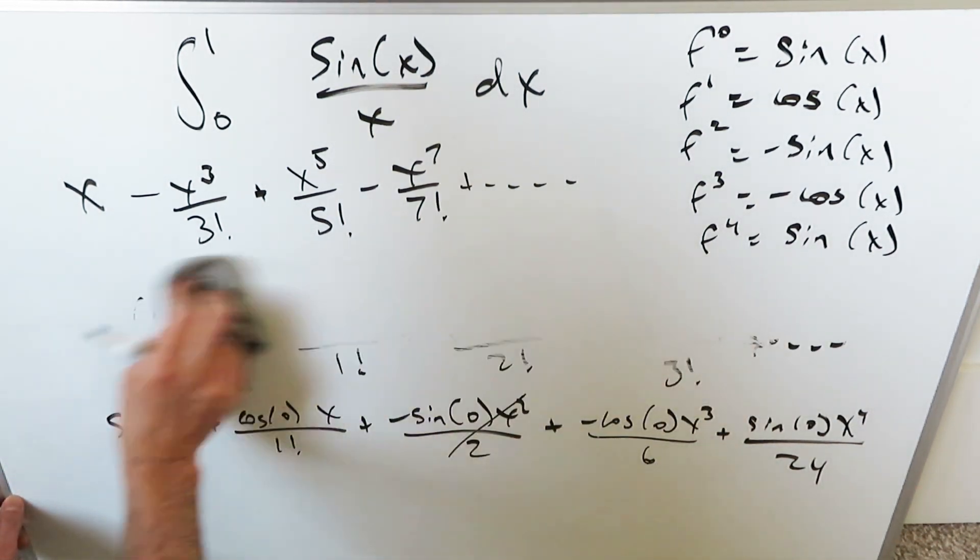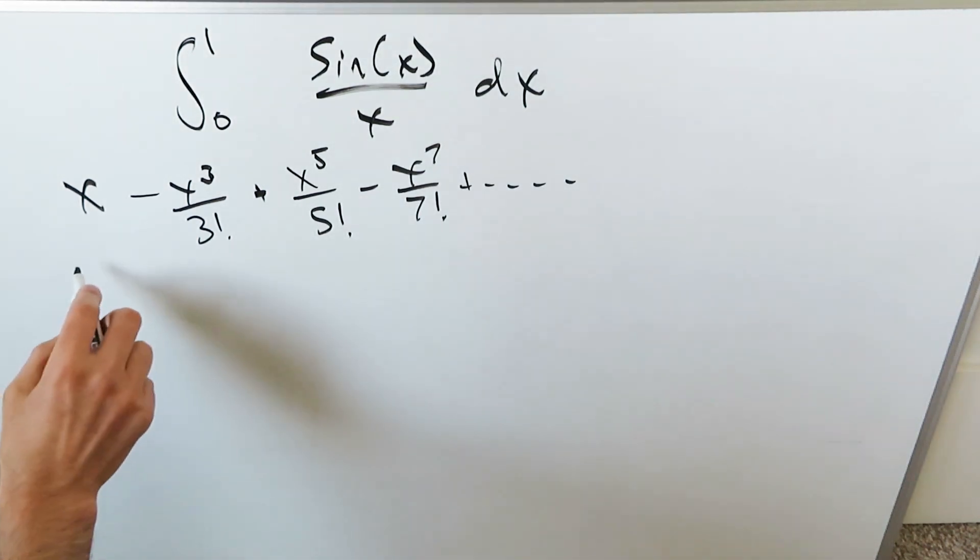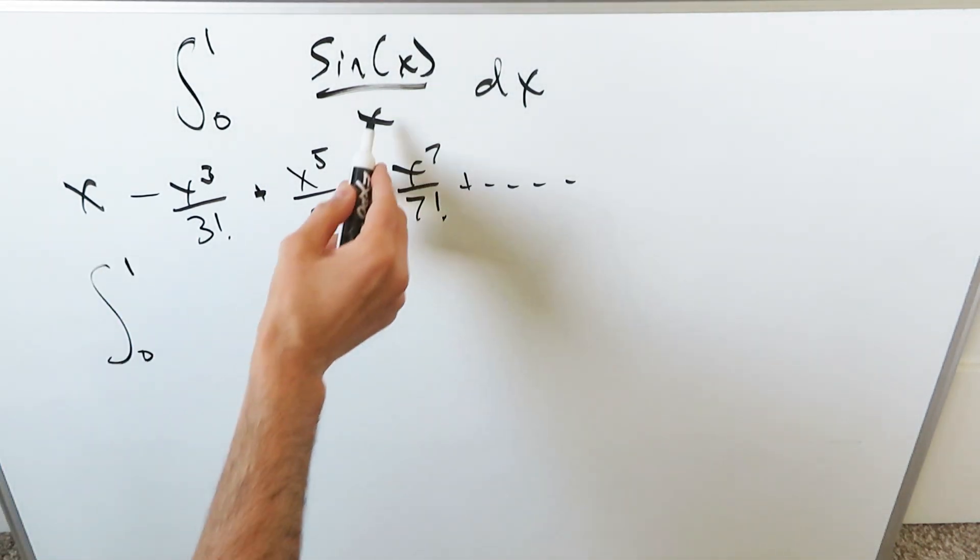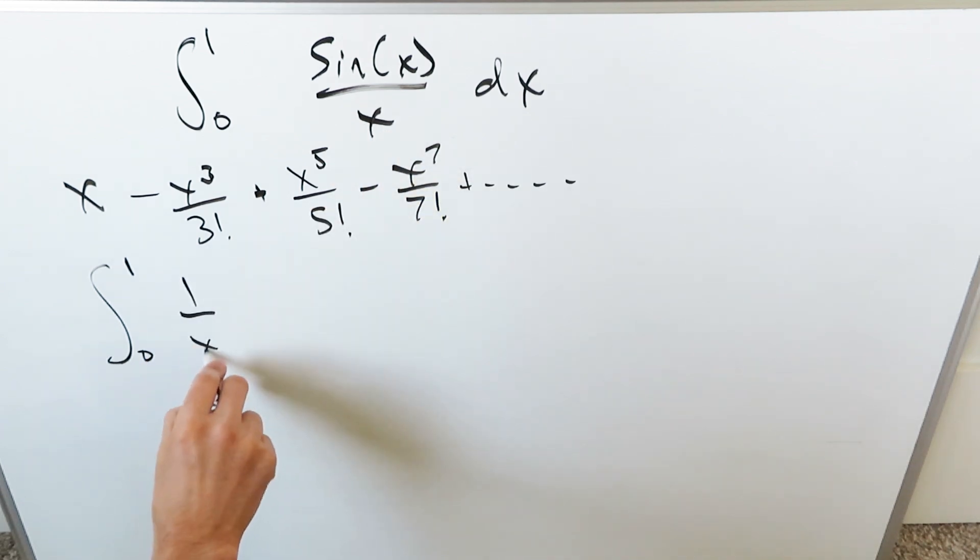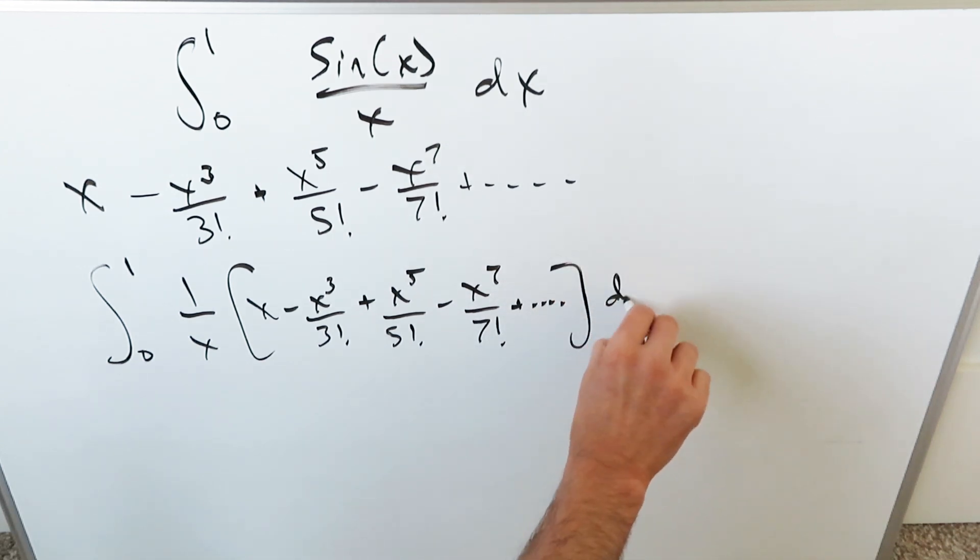Now we bring that series into our integral. Our integral becomes: from 0 to 1, I have 1 over x, then I have the sine, which is x minus x cubed over 3 factorial, plus x to the 5 over 5 factorial, minus x to the 7 over 7 factorial, and so on, dx.